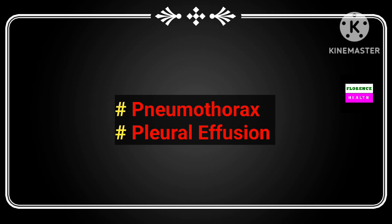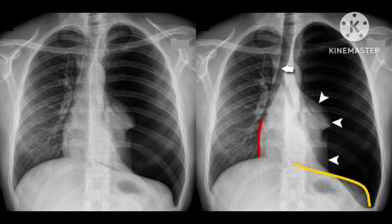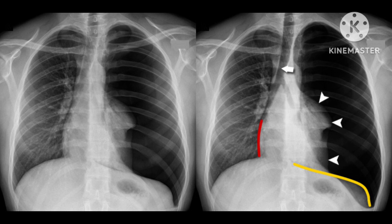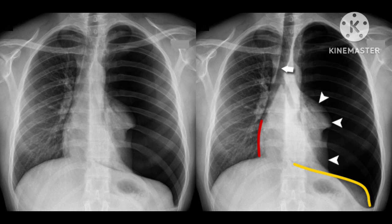Let's see how to recognize pleural effusion and pneumothorax on X-ray. Pneumothorax means air inside the pleural cavity; pleural effusion means fluid inside the pleural cavity. This slide shows the left side of the chest is more black in comparison to the right, with loss of its bronchovascular markings. The color of the left side is similar to room air, and bronchovascular markings visible on the right side are absent on the left. If one side of the lung is abnormally black with loss of bronchovascular markings, it is in favor of pneumothorax.